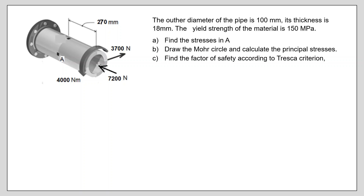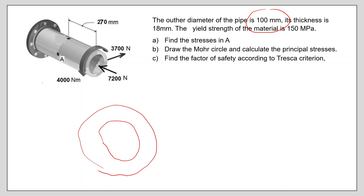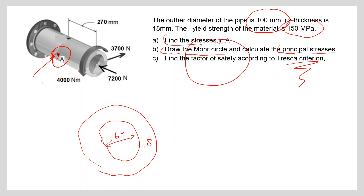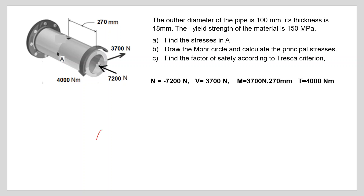For the second problem, we have a pipe with a diameter of 100 mm and a thickness of 18 mm. The material is ductile with a yield strength of 150 MPa. Point A is where we calculate the stress state. After finding the stresses, we draw Mohr's circle, determine the principal stresses, and use the Tresca criteria to find the factor of safety.